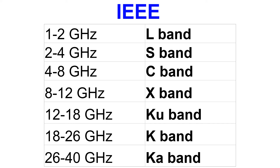L band according to IEEE is 1 to 2 GHz, at the upper end of UHF frequencies. In between L band and C band is S band, with a range of 2 to 4 GHz, which is an overlap between UHF and SHF. S band contains the 2.4 GHz Wi-Fi band. X band is between C band and Ku band, at 8 to 12 GHz.